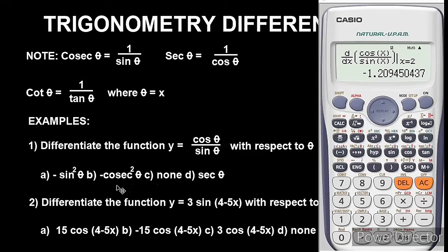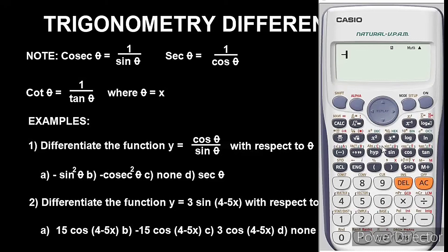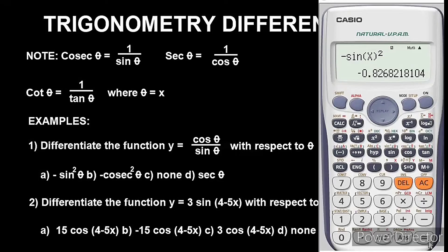The differentiated result gave us approximately negative 1.209 — wait, let's check. We start with option A, which says minus sin squared θ. Enter it as: minus, sin, bracket, alpha x, close bracket, squared. Press equals and we get minus 0.8. This does not match our result, so option A is wrong.